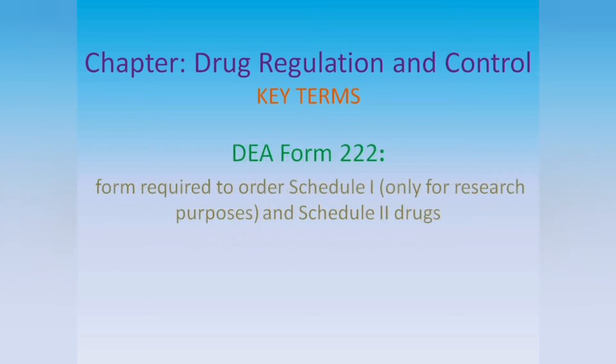DEA Form 222: a form required to order Schedule I drugs for research purposes and Schedule II drugs for prescription purposes.